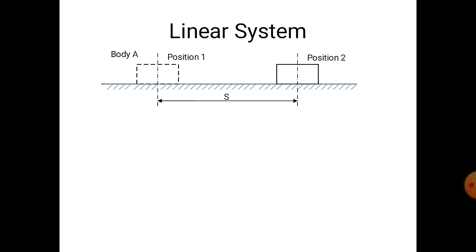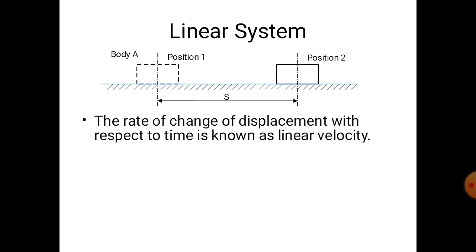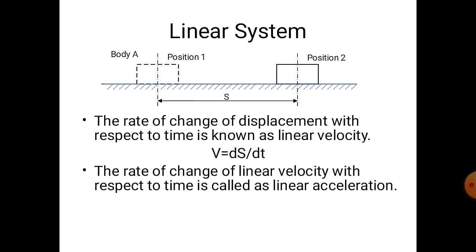The next important point is the linear system. In this, the body moves along a straight line. Consider a body A which moves from position 1 to position 2 in time t. The displacement of the body is s. The velocity of body A is given by the rate of change of displacement with respect to time. This is the linear velocity as the body is moving along a straight line. The rate of change of linear velocity with respect to time is known as linear acceleration, indicated by small a, and it is given by dv by dt.